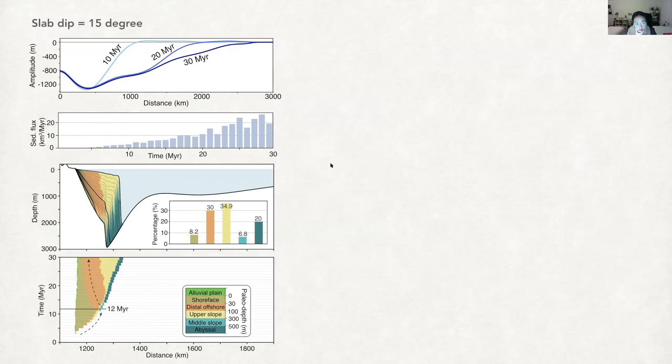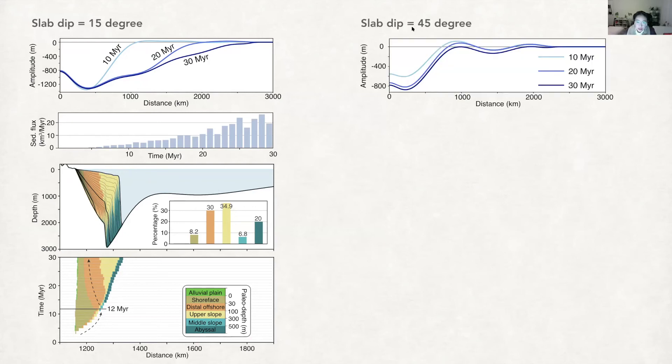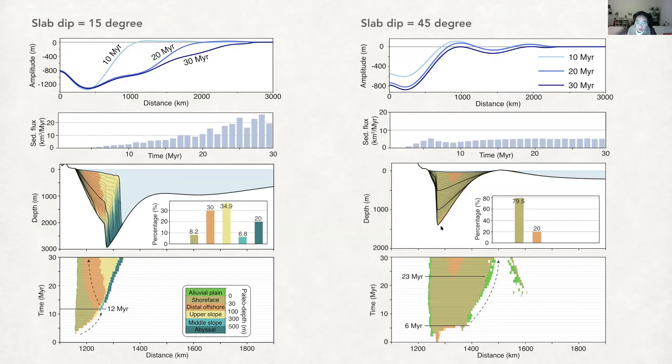So if we make the slab dip steeper, for example 45 degrees, we find that the dynamic topography is more focused close to the subduction zone. And also the stratigraphic record shows the foredip zone is filled but not overfilled. And this forebulge is exposed and also being incised, providing very few amount of sediments to the back bulge, which can also be shown in the Wheeler diagram.